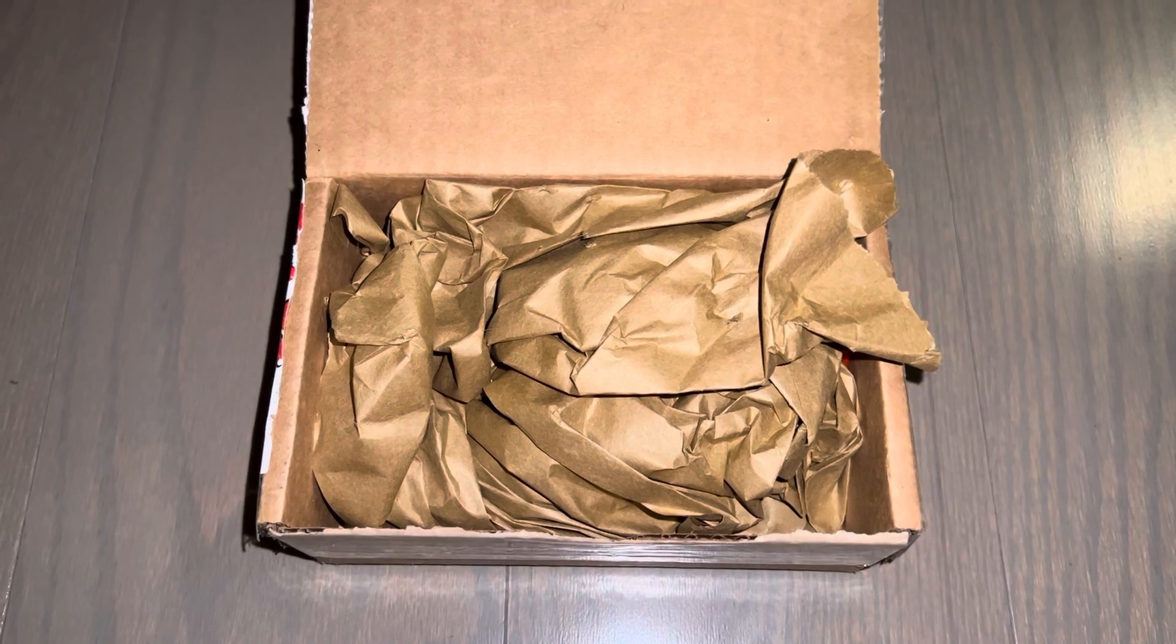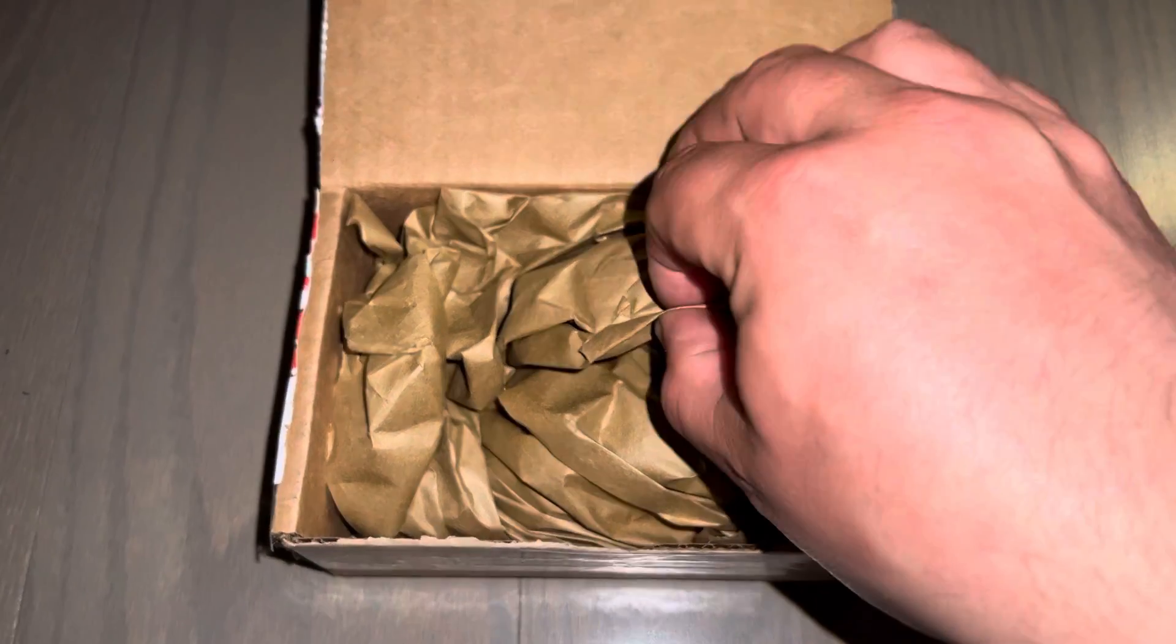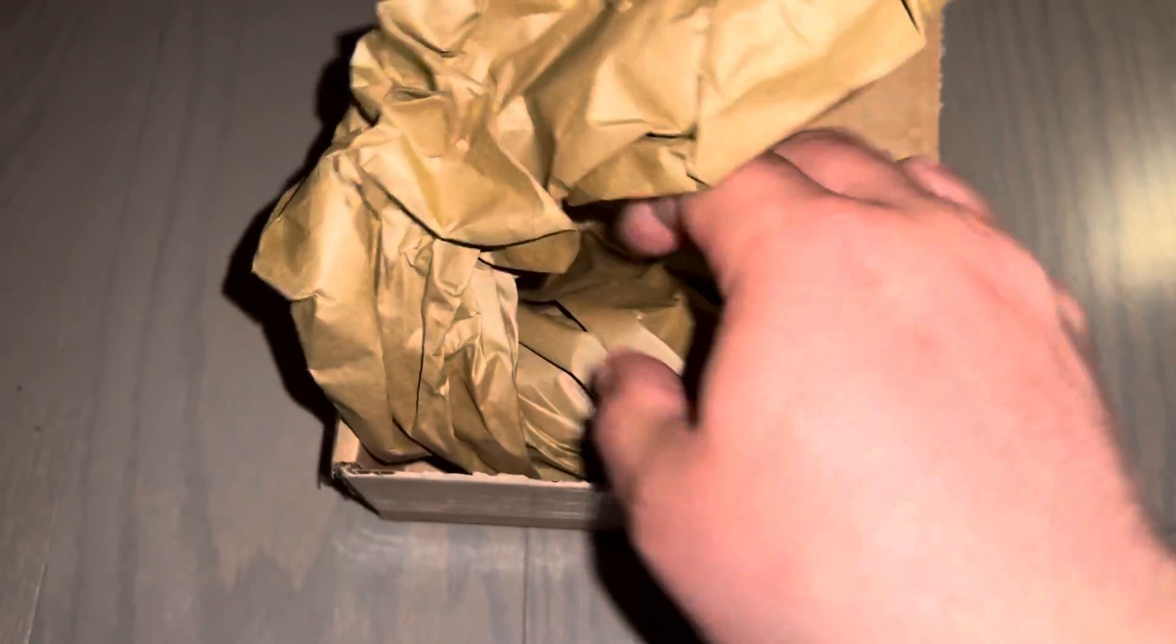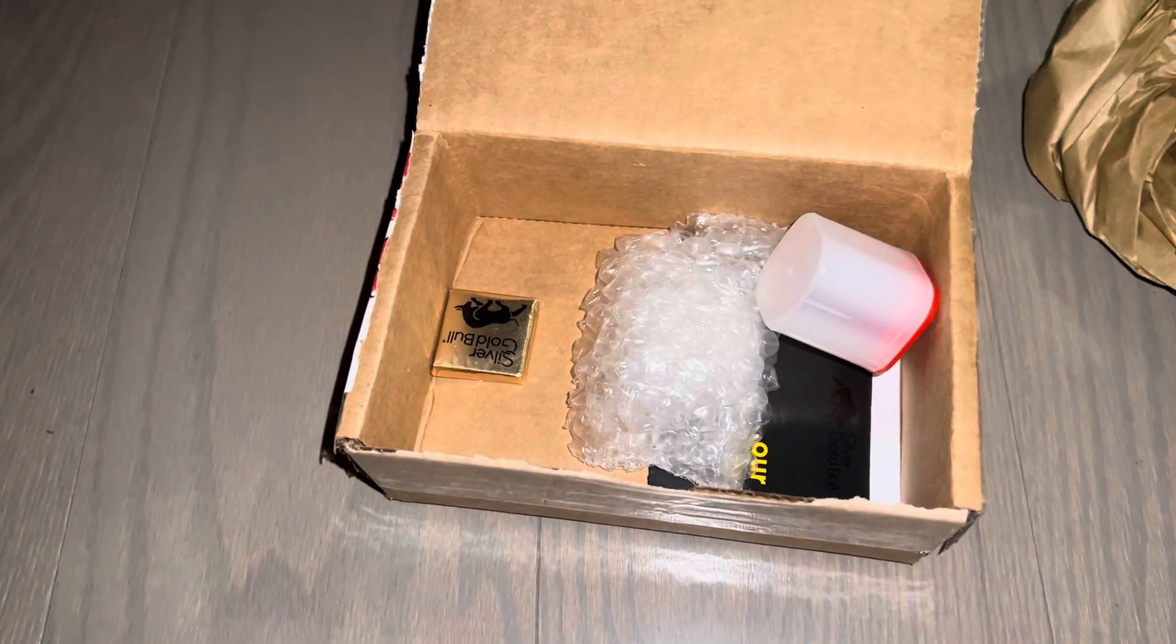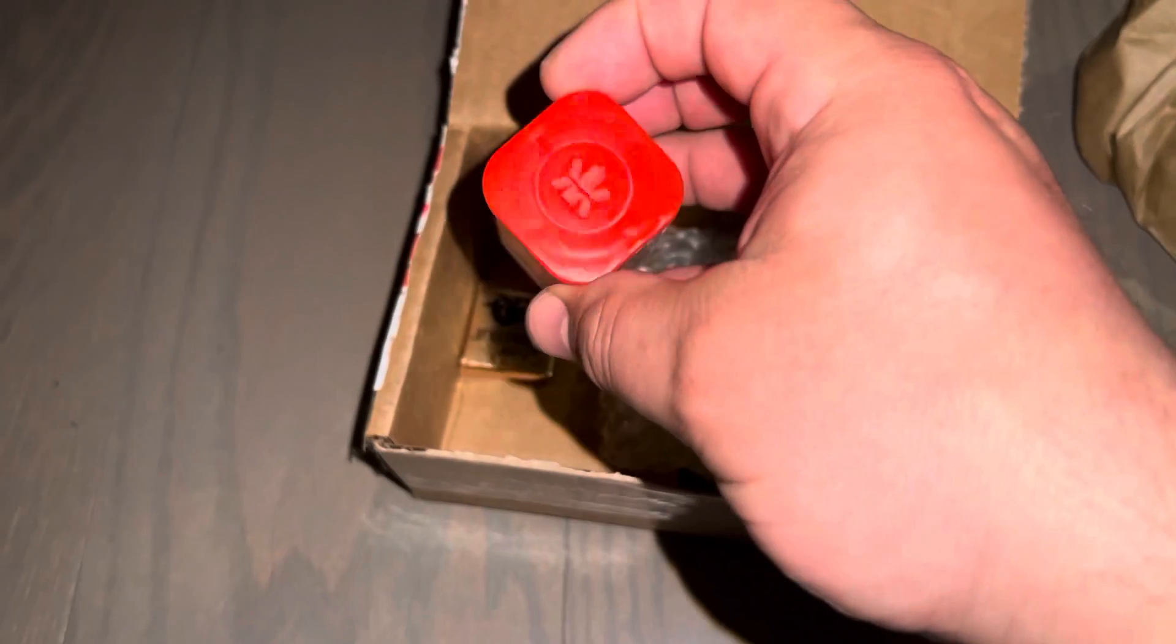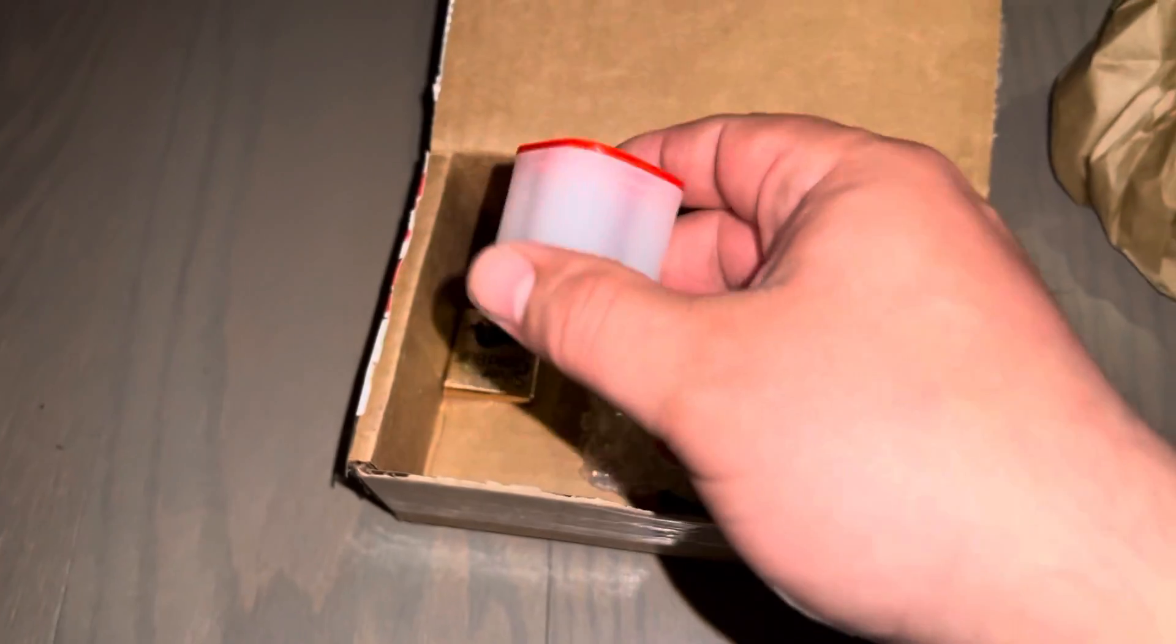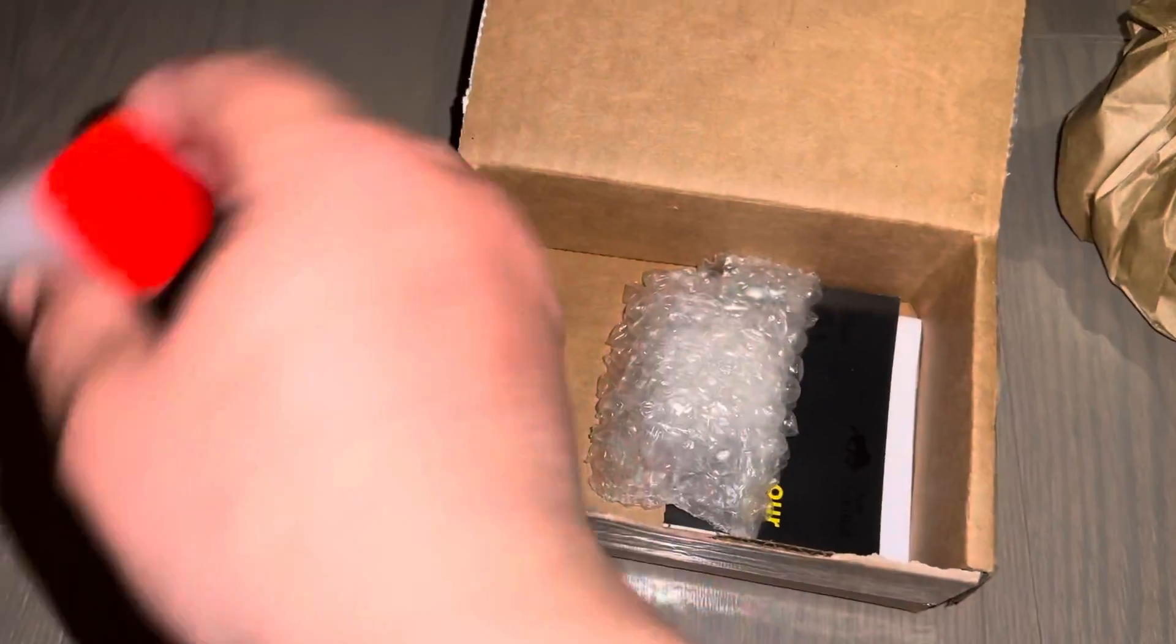This was from Silver Gold Bull. It's a very small unpackaging. This is an empty tube that I'm going to fill with gold Maples. That's kind of a goal of mine to fill this. It doesn't matter what year, I'm just going to do any year, but there's nothing in there.